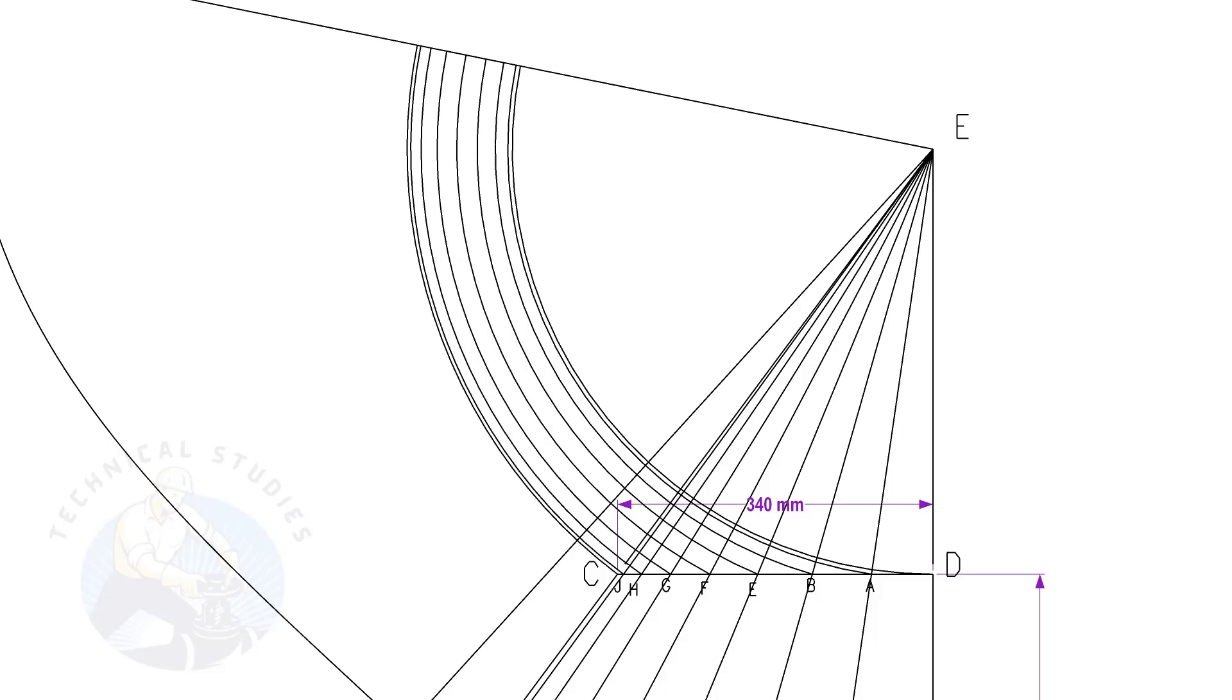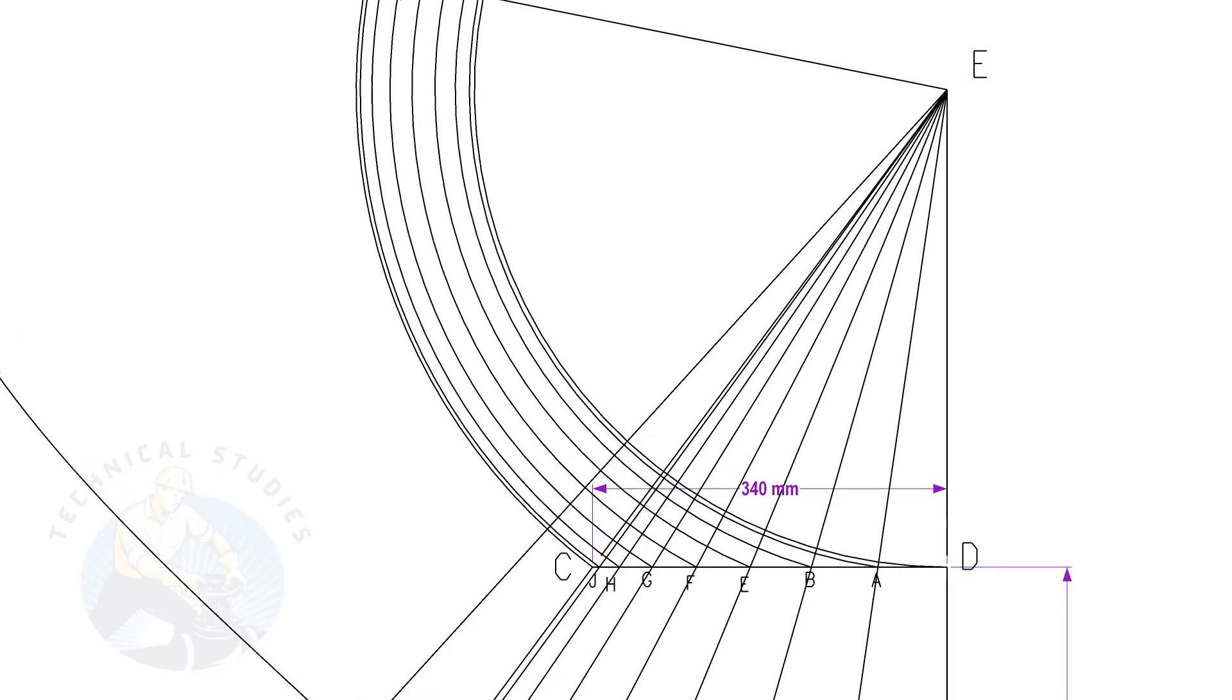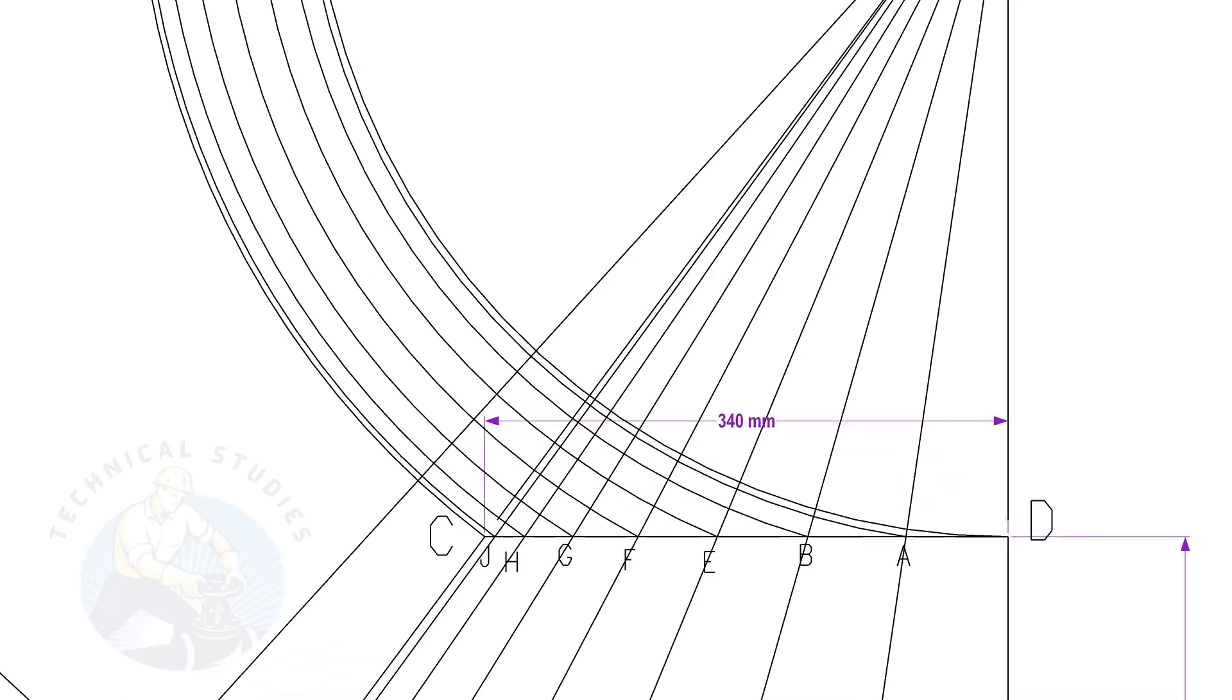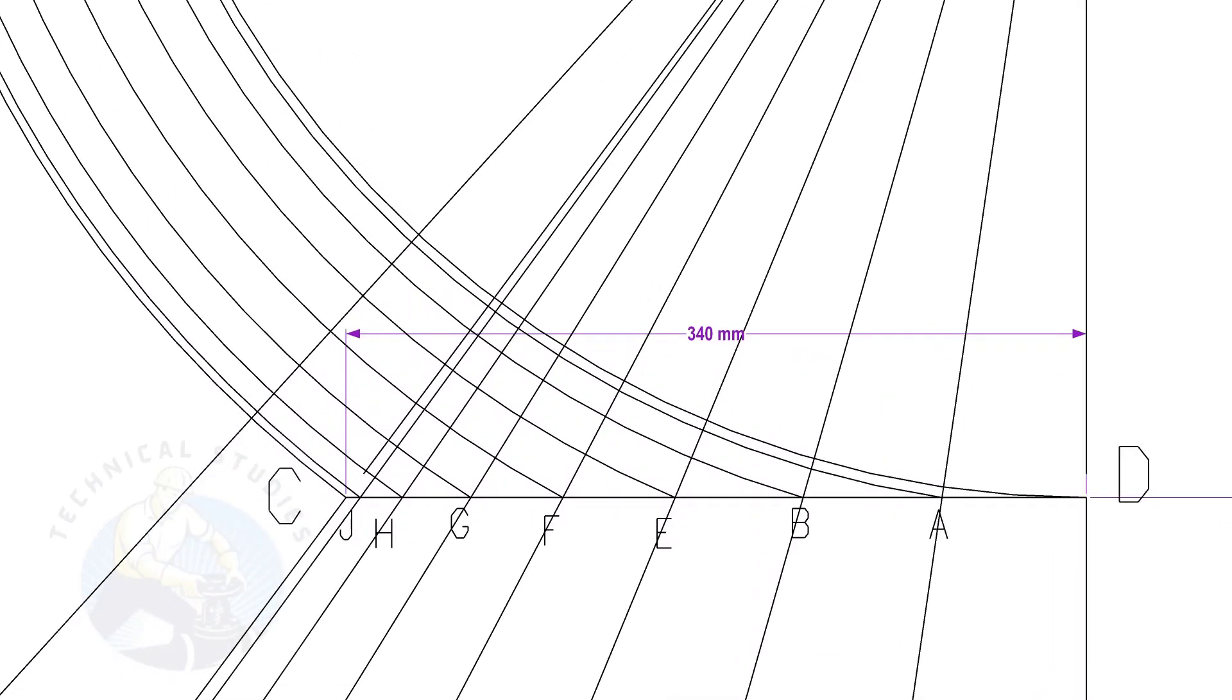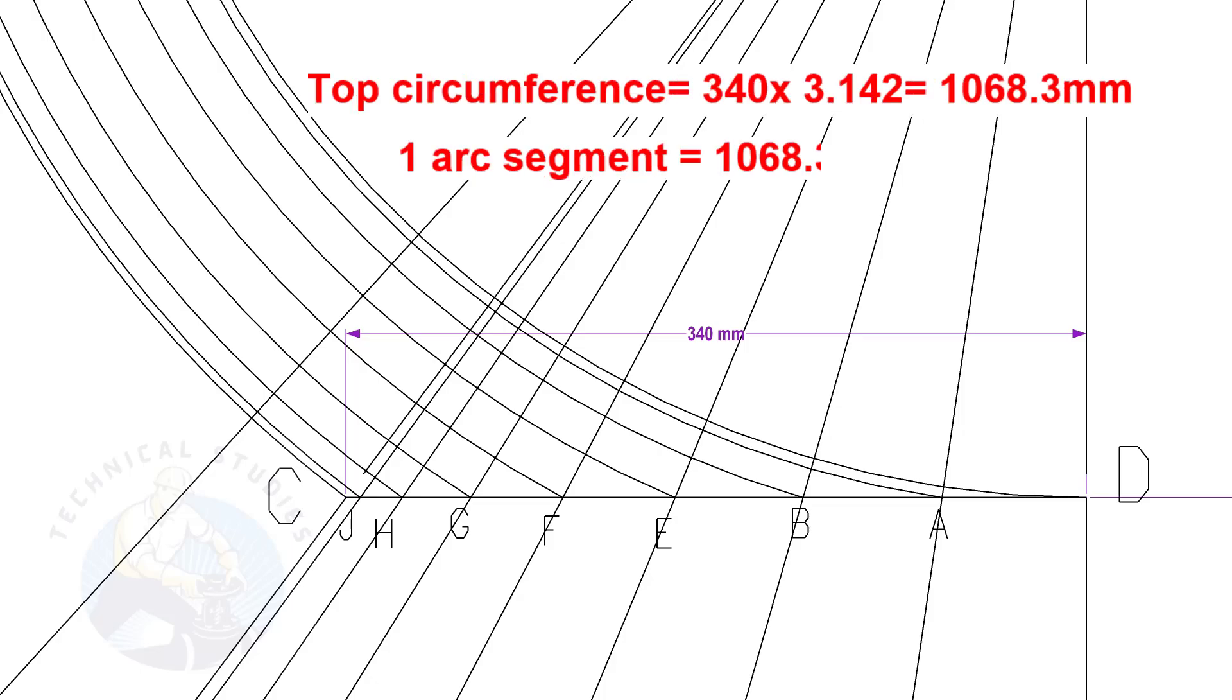Calculate the circumference of the top side and divide it by 16. Top side diameter is 340mm. The length of one arc segment is 66.77mm.